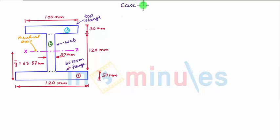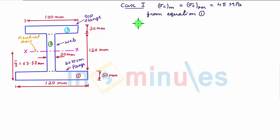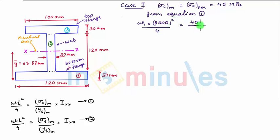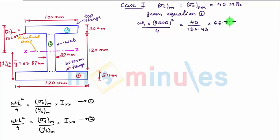Now let us take Case 1, where σc_max is equal to σc_permissible, which is equal to 45 megapascal. Upon substituting this in equation 1, we have w1 × L² = 8000² / 4 = σc_max (45) / yc_max (136.43) × Ixx (66.71 × 10⁶). Upon solving this, we get the value of w1 as 1.375 newton per mm.